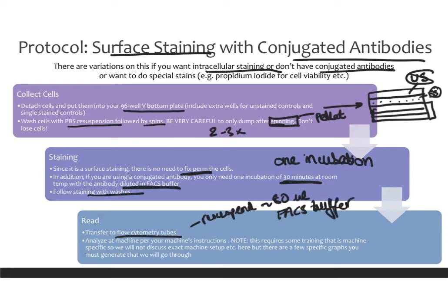Then you bring that over to your core or to your machine. This is the part where it gets machine-specific. Every machine is different — these are very expensive machines, and you would definitely want to get trained by someone who knows exactly how your machine works. But there are some things that are the same. There are a few specific graphs that you must generate, and we will talk about those in the next slides.